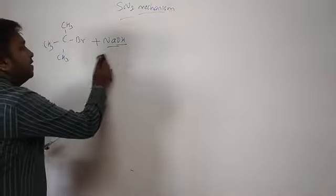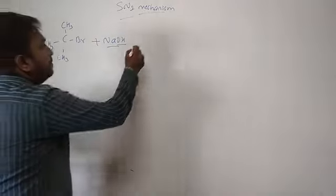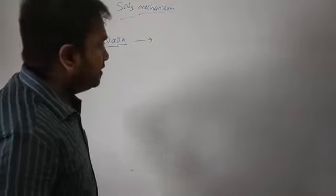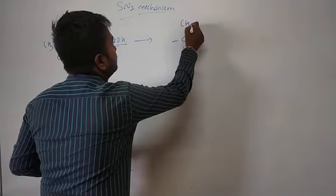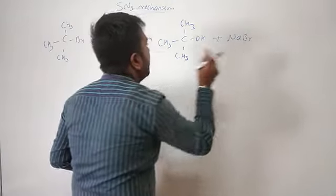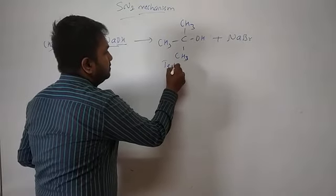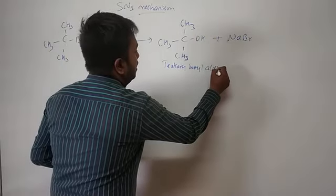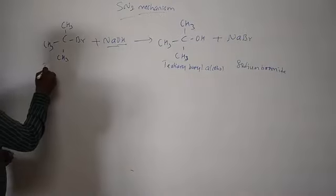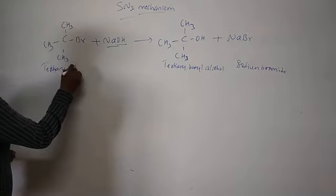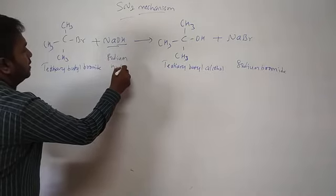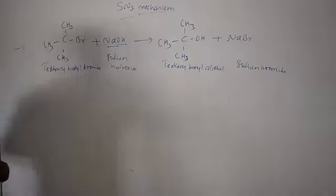The product will be: the bromine is substituted by the hydroxyl group. So we get tertiary butyl alcohol and sodium bromide as products. The reaction is: tertiary butyl bromide + sodium hydroxide → tertiary butyl alcohol + sodium bromide.